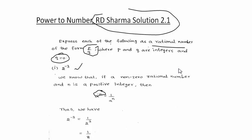a to the power minus n is equal to 1 by a to the power n. This means that negative power in numerator becomes positive in denominator, and vice versa.